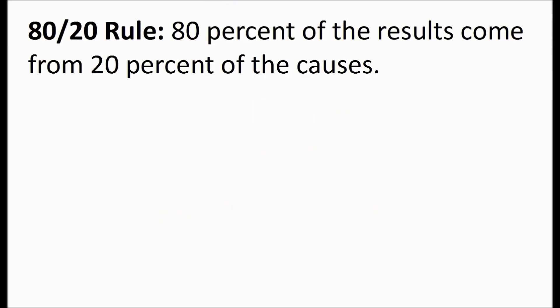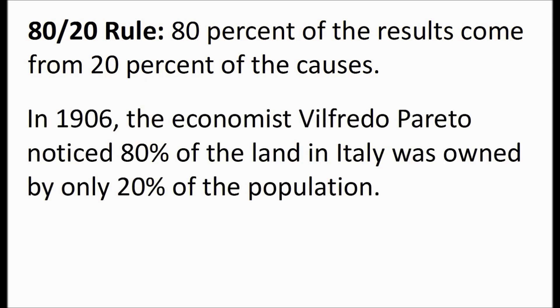The 80-20 rule states that 80% of the results come from 20% of the causes. It was observed in 1906 by the economist Wilfredo Pareto, who noticed that 80% of the land in Italy was owned by only 20% of the population.